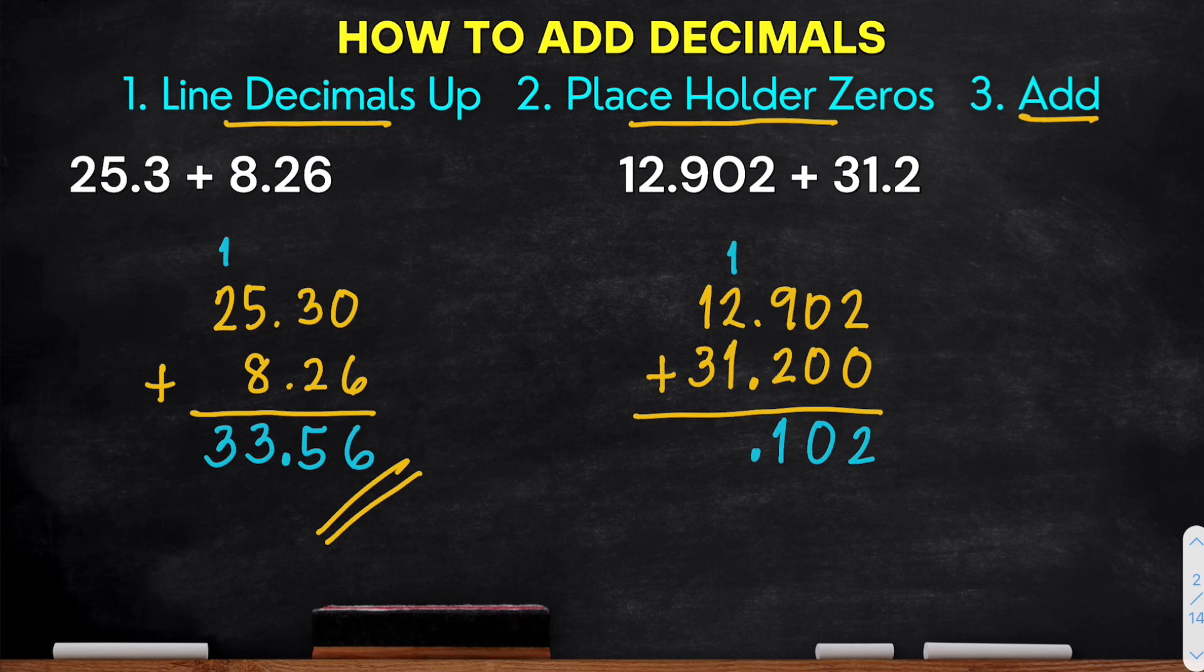Then next, we have 1 plus 2 plus 1, that is equal to 4. Then last, we have 1 plus 3, that is positive 4. Okay. So the final answer is 44.102. Okay. Got it guys? So let's have another example.